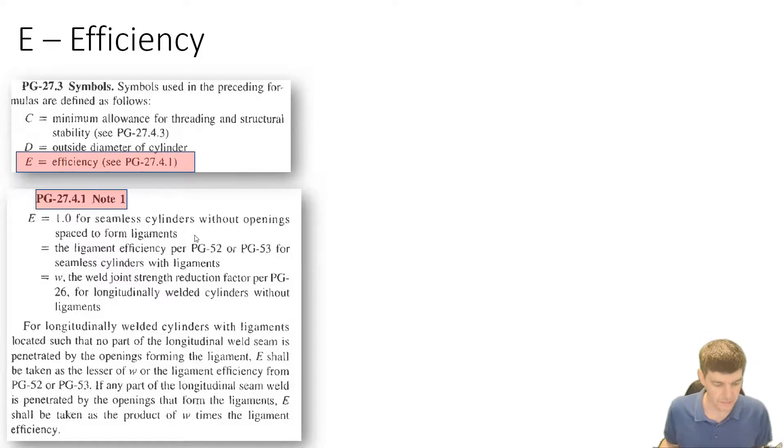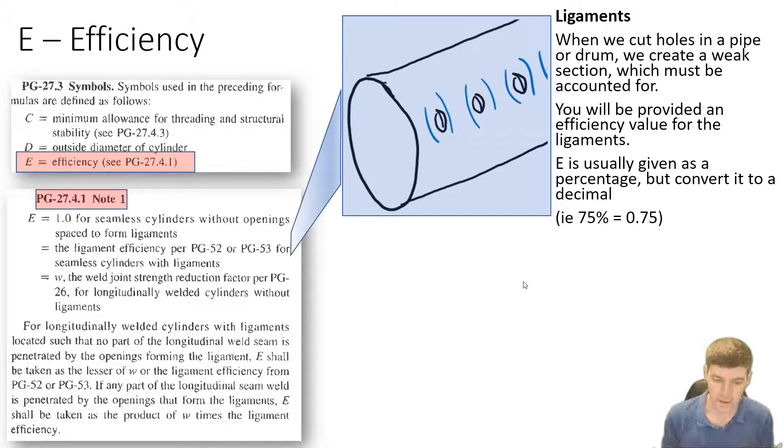And what we get if we talk about a ligament is we have, say for instance, a drum. And if we cut holes into it, so we have some tubes that go into the drum or we have other connections that come off the drum, we've now weakened that structure. And so depending on the size of the holes, the orientation of the holes, if we've strengthened them, we potentially have weakened this pressure vessel. And so when we look at ligaments, you're going to be given a value likely to say your ligament efficiency is 75%, okay, or it's 100%. But either way, what you're going to do is you're going to take that efficiency percentage and we'll convert it to a decimal. So we'll use a decimal for this as our value in our calculations.